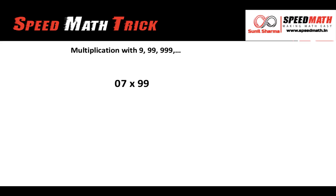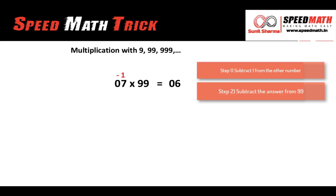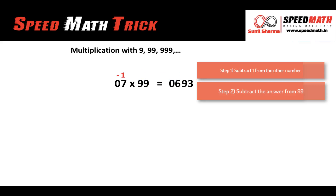We place one zero before 7 to make it 07, giving us two digits to match the two nines. Step 1: subtract 1 from 07 to get 06. Step 2: subtract 06 from 99 — 9 minus 0 is 9, and 9 minus 6 is 3. We erase the leading zero, so the answer is 693.